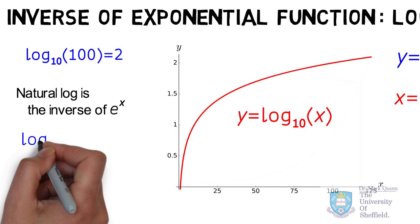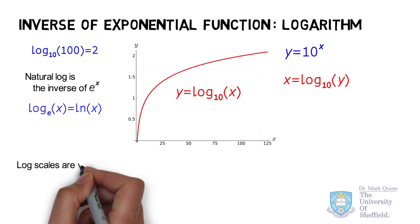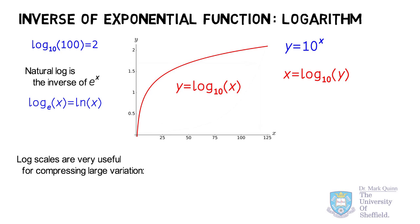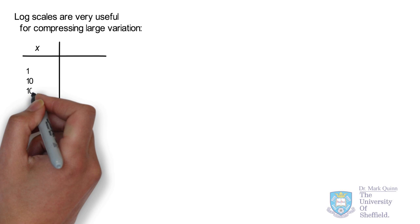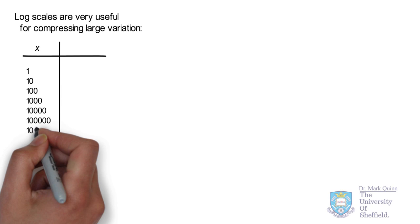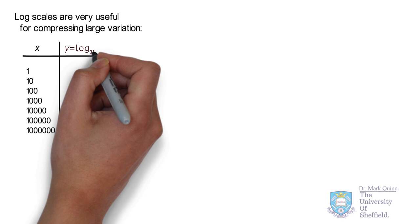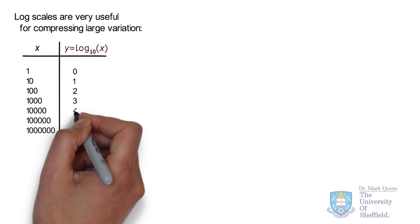Besides being useful for manual computation, logs are also very useful for compressing large variation. For example, we can convert a huge variation in a variable x to a much smaller range of variation in y. Using base 10, it will reduce the domain of x spanning 1 to 2 million to simply 1 to 6.